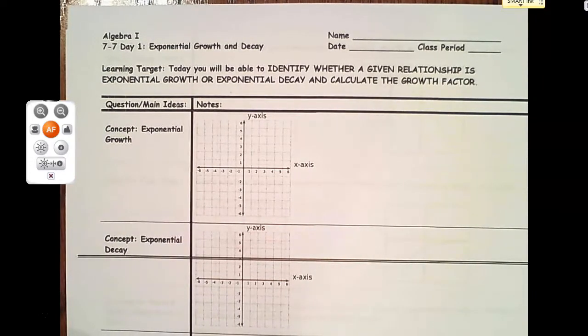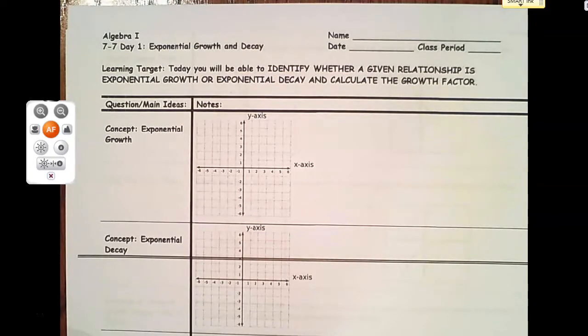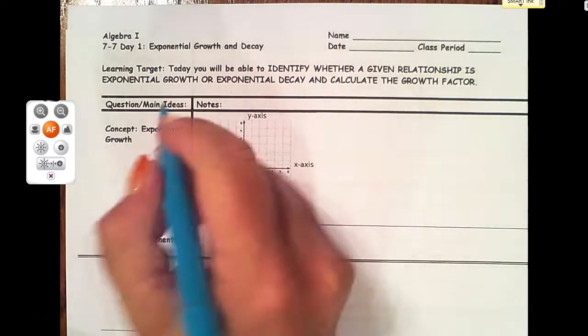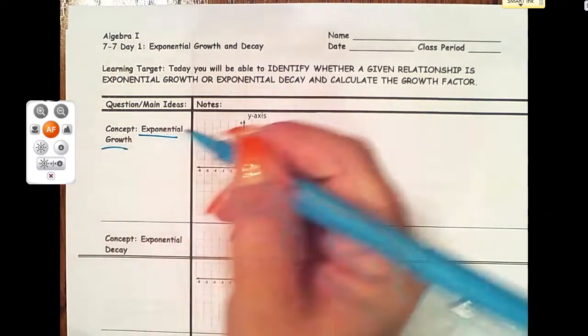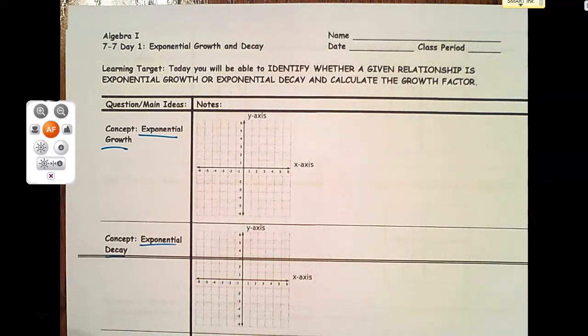We learned about the exponential equation in the last unit and today we're going to actually use that concept to look at some things that will grow in amount or will decrease in amount. So we have two main concepts: Exponential Growth and Exponential Decay.